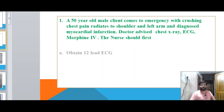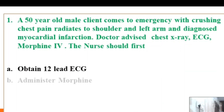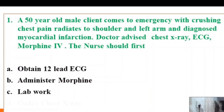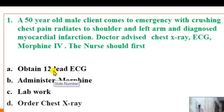A 50-year-old male client comes to the emergency with crushing chest pain that radiates to the shoulder and left arm, diagnosed with myocardial infarction. The doctor advised chest X-ray, ECG, and Morphine IV. The nurse should first: options — obtain 12-lead ECG, administer Morphine, lab work, or order chest X-ray.